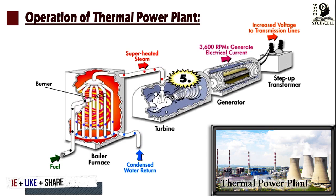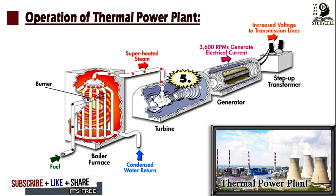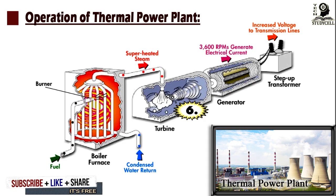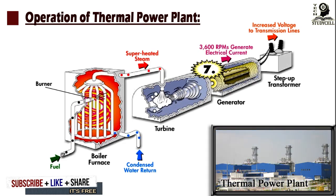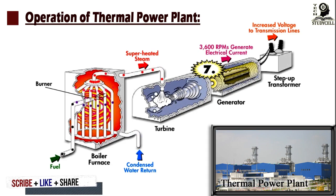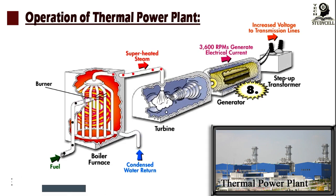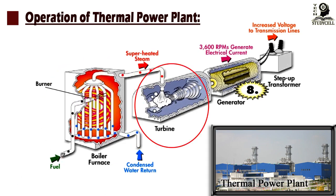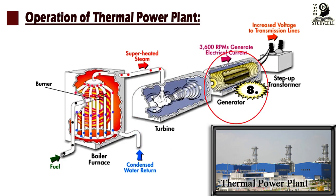A thermal power station is a power plant in which heat energy is converted to electric power. Here we will discuss the functions of the main components of a thermal power plant, like the boiler, steam turbine, generator or alternator, and transformer.